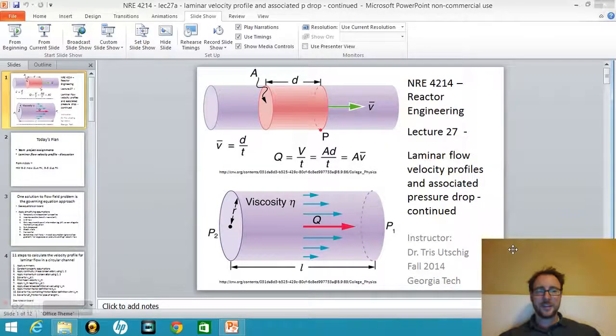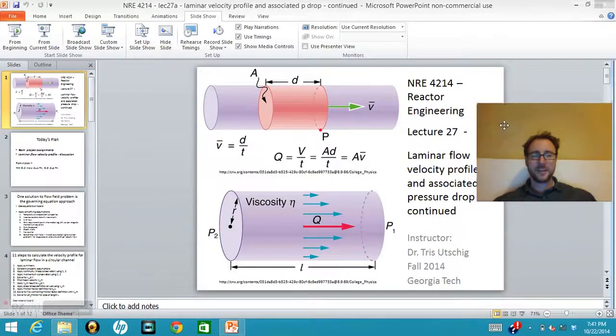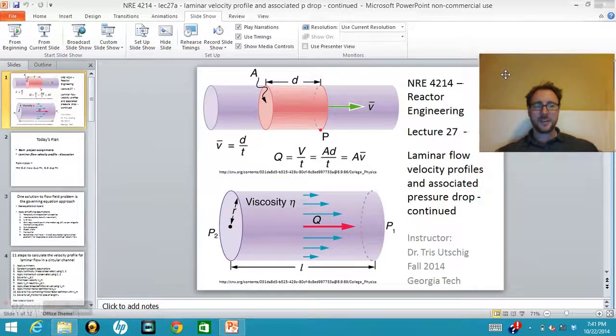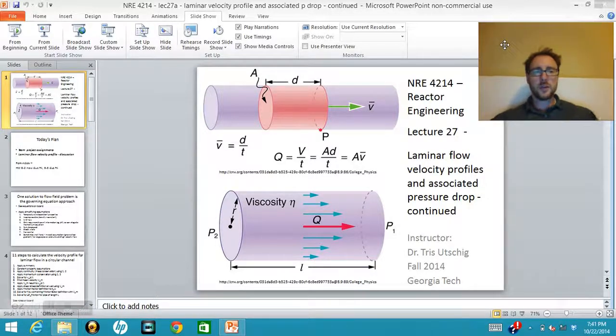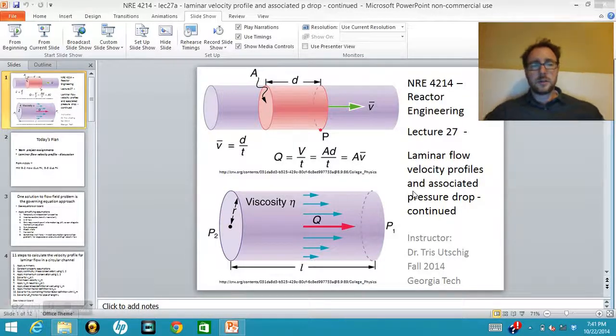We're going to be talking about laminar flow, that is a slow fluid flow, in the case of a circular tube which is analogous to the flow inside of the nuclear reactor core up along the fuel pins, between the fuel pins for the coolant which is water.